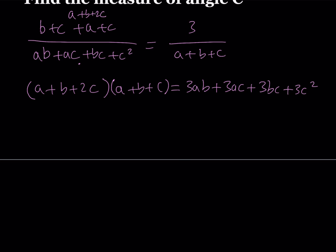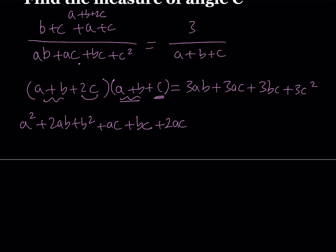Now I'd like to distribute the left hand side, but in order to do it in an easier way, I'm just going to multiply these two first. A plus B times A plus B gives me A plus B quantity squared, which equals A squared plus 2AB plus B squared. And then I'm going to distribute A plus B over C, giving me AC plus BC. Then I'll distribute 2C over A plus B, which gives me 2AC plus 2BC, and finally multiply 2C times C, which is 2C squared.